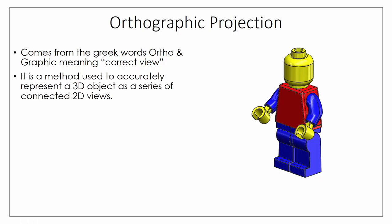We do this by taking a three-dimensional object and breaking it down into a series of connected two-dimensional views. If you look at a 3D view of a Lego figure, you know what it is, but if you wanted to make this piece, none of the shapes we see are true shapes. This circle here isn't actually drawn as a circle, which can be quite difficult to draw and measure from.